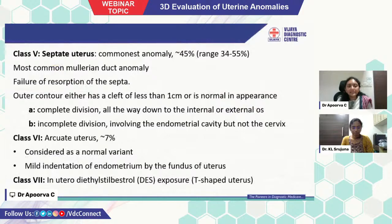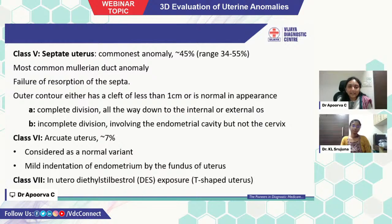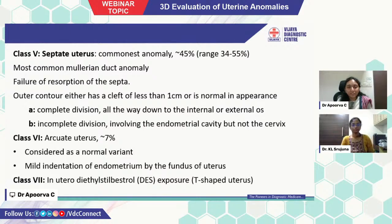Class 5 is septate uterus — the most common anomaly, ranging around 45%. It is the most common Mullerian duct anomaly, caused by failure of resorption of the septum. The outer contour either has a cleft of less than 1 cm or is normal in appearance. It is divided into two types: complete division all the way down to the internal or external os, and incomplete division involving the endometrial cavity but not the cervix.